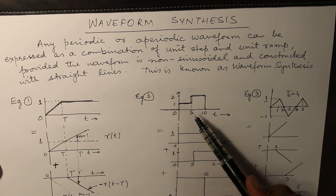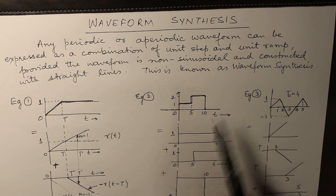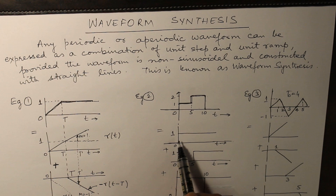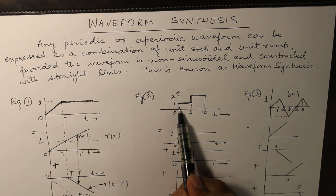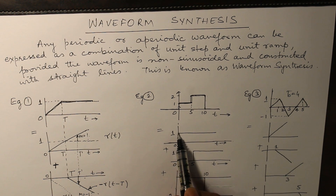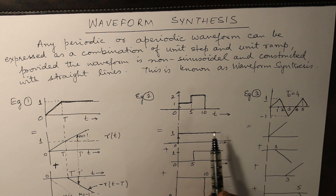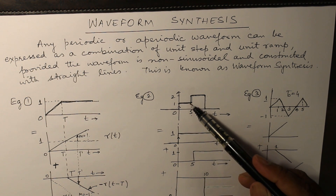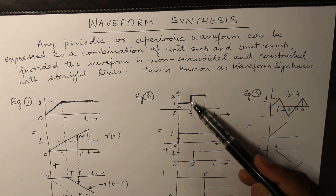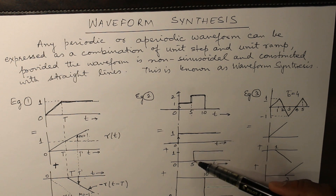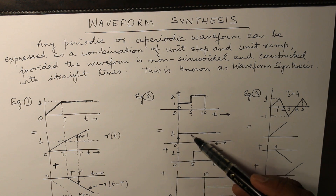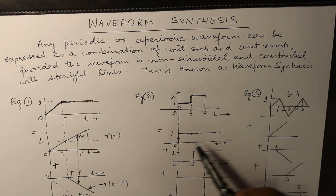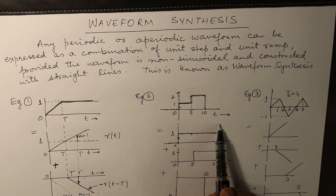Now let us come to the second example, which is relatively simpler. First, there is a change in magnitude from 0 to 1 — a unit step signal. This goes on for all time. At t equal to 5, there is a jump from 1 to 2, represented by another unit step from 0 to 1 at t equal to 5, so that when added the resulting waveform mounts up.